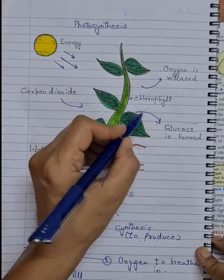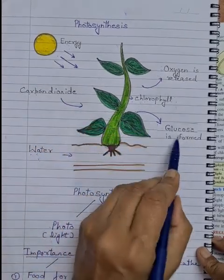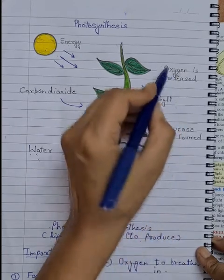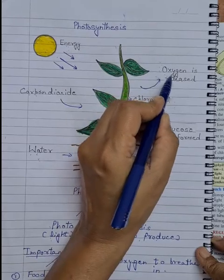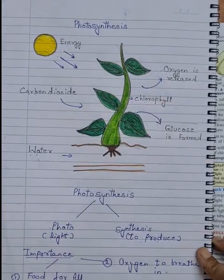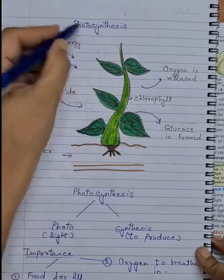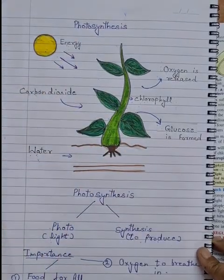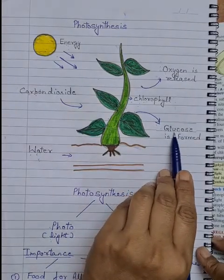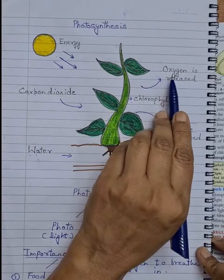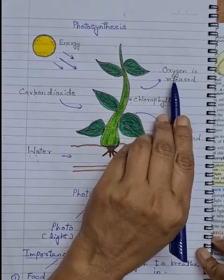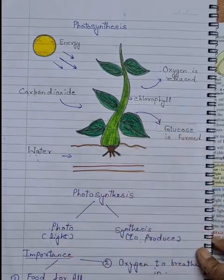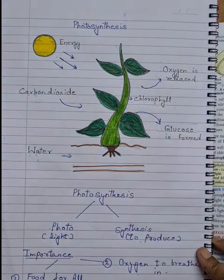The food which plants prepare is in the form of simple sugar called glucose, and they release one gas as a by-product — oxygen gas. Both products of the process of photosynthesis are very important for all living organisms: one is a source of food, and the other is a gas used by all living organisms for breathing and for oxidation of glucose by the process of respiration.